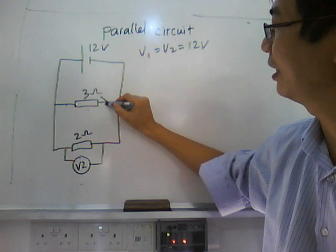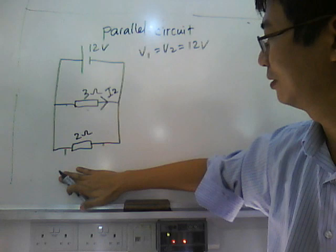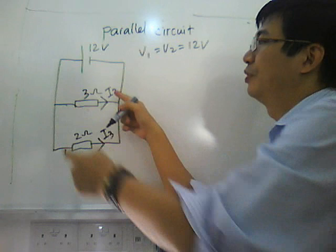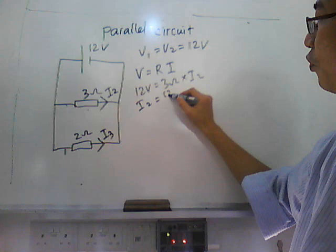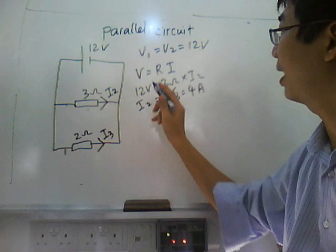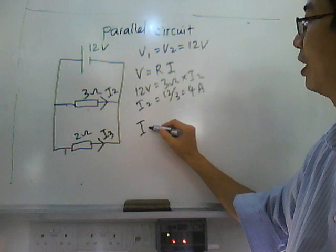We are interested in the currents I2 and I3. Because it's 12V and 3 ohm, we apply the formula V equals R times I. We find that I2 is 12 divided by 3, which is 4 amperes. Likewise, applying 12V divided by 2 ohm, the current I3 is 6 amperes.